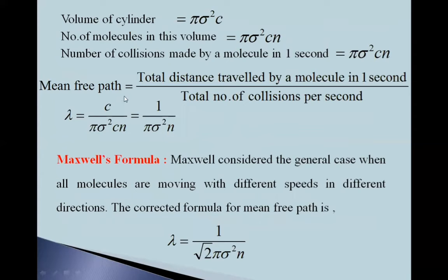So mean free path is given by this formula: total distance traveled by a molecule in one second upon total number of collisions per second. So mean free path lambda is given by total distance c upon π sigma squared cn. So this c gets cancelled, and we get 1 upon π sigma squared n.